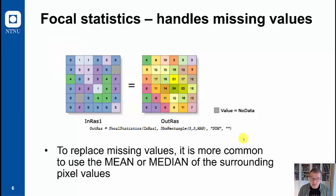Focal statistics is actually one way to handle missing values. We see here in this example a missing value. If you are going to replace a no data value, it is more common to take the mean or the median of the surrounding pixels. We need to ignore no data to be allowed to calculate a new value for this one.